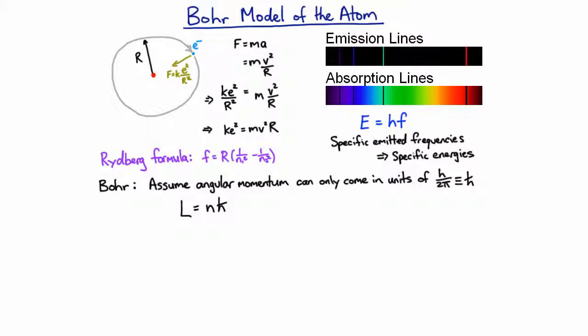Bohr had no motivation for it other than he needed to do it in order to explain the emission and absorption lines from hydrogen. So let's see how he got the result he wanted. Remember that for a circular orbit, the angular momentum is just the momentum times the radius, and the linear momentum is just mass times velocity. So that's going to be quantized in units of h-bar. And what we have is one equation here and two unknowns, velocity and radius. Fortunately, we have another equation over here, and if we've got two equations and two unknowns, then we know we can solve it.